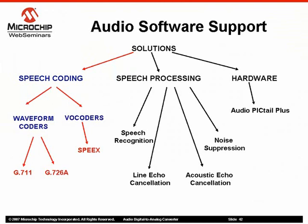The Speech Coding Libraries can be classified into Waveform Coders and Vocoders. Waveform Coders exploit redundancies in the signal waveforms to decrease the number of bits used to represent a speech frame. G.711 and G.726A are examples of waveform coders. Vocoders encode a speech frame as a set of parameters, which are then used by the decoder to regenerate the corresponding speech signal. The SPEEX Algorithm is an example of a vocoder.